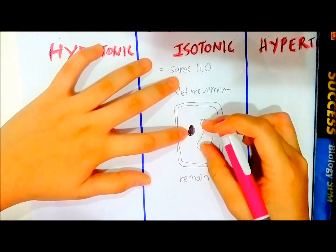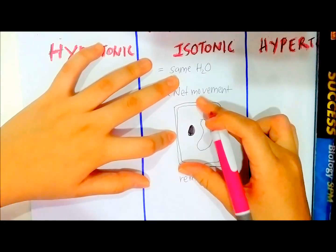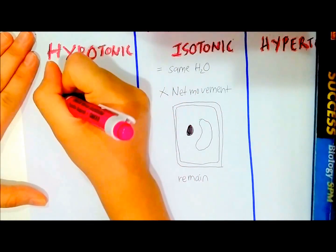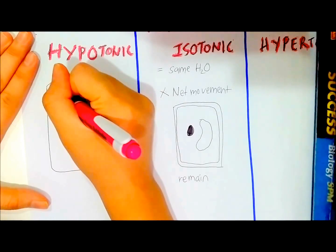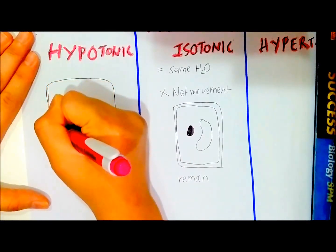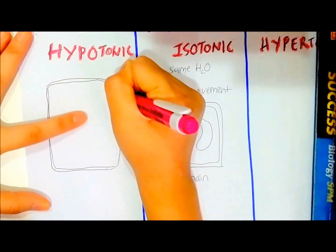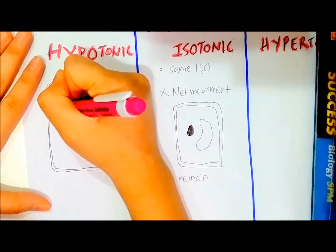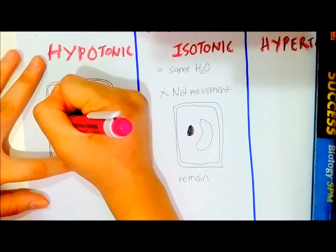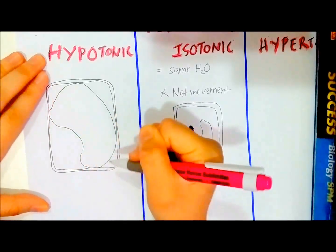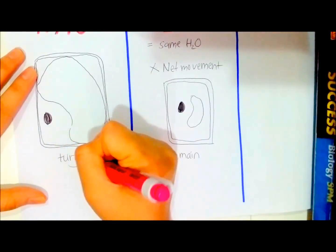When water enters, it causes the vacuole to expand. When the vacuole expands, it pushes the plasma membrane outward. Therefore, the plant cell becomes turgid, as shown in the diagram.